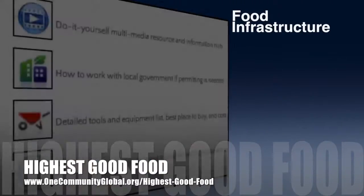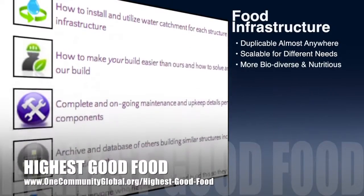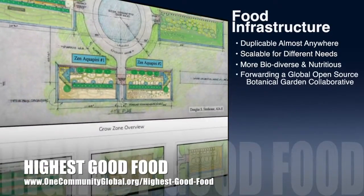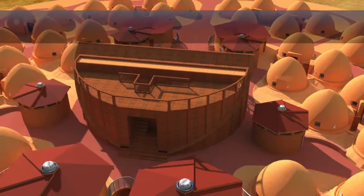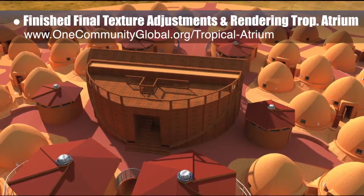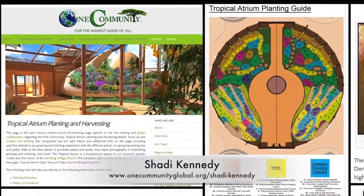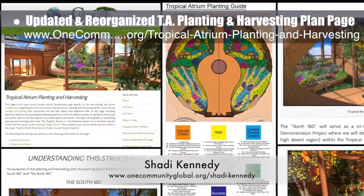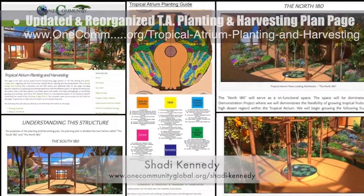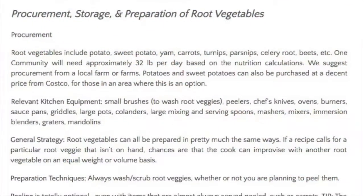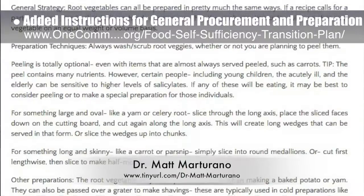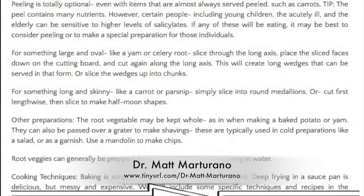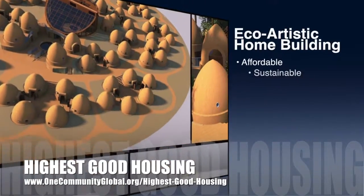One Community's approach to highest good food is duplicable almost anywhere, scalable for different needs, more biodiverse and nutritious, part of a global open source botanical garden collaborative, and includes nine different free shared and duplicable growing environments. This week the core team finished the final texture adjustments and rendering for the tropical atrium, updated and reorganized the tropical atrium planting and harvesting plan page to include all images created by artist and graphic designer Shaddy Kennedy, and added instructions for general procurement and preparation of root vegetables as suggested by naturopathic Dr. Matt Martorano.